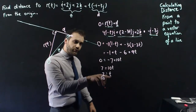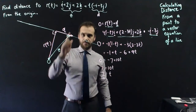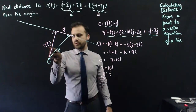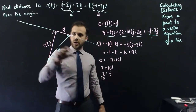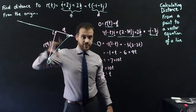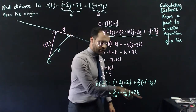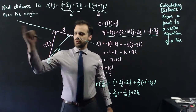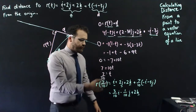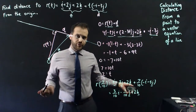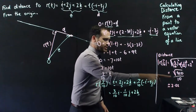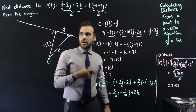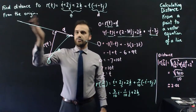Now I have a value for t where r(t) and d are perpendicular. Substituting t = 7/10 into r(t), into this vector equation, I now know what that vector equation is. This vector is the one that is perpendicular to the line from the origin. Finding the distance is really trivial — a little bit of 3D Pythagoras gives an answer of approximately 2.02 units.